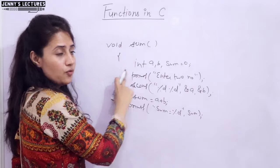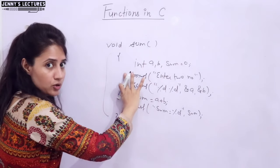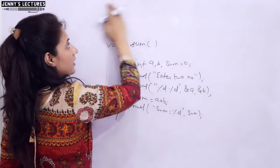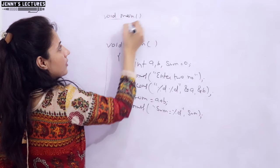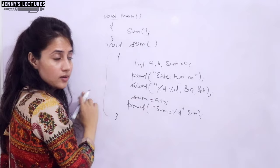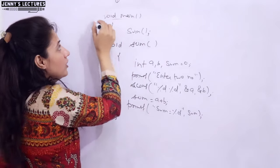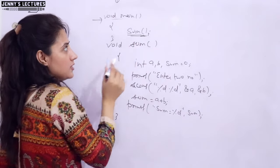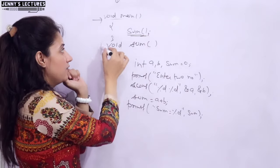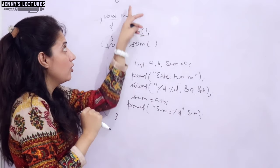Let's look at how to declare a function. Here we have a function definition — it defines what the function is doing. In main, we call the function. Suppose before the definition we have void main, and inside main we are calling the function sum. When the program runs, control goes to main, hits the function call, and jumps to the definition. It matches the definition against the declaration — but here we are not declaring the function.